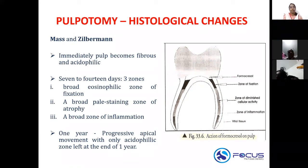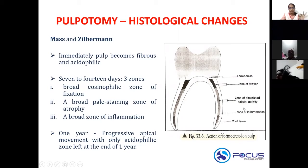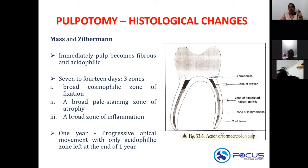The histological zones in pulpotomy are given by Mass and Zilberman. You see three zones. If the question asks from the coronal portion towards the radicular portion, you write: zone of fixation, zone of atrophy, zone of inflammation — FAI. If they ask from the apex towards the cervical region, you write: inflammation, atrophy, fixation. Adjacent to the formocresol you will see fixation, then atrophy, then inflammation.